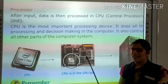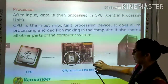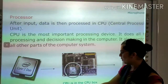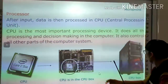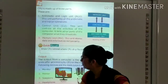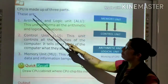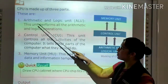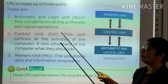You can see the CPU — its internal structure and the CPU box. CPU is made up of three parts. The first is the Arithmetic and Logic Unit, which performs all arithmetic and logical operations.